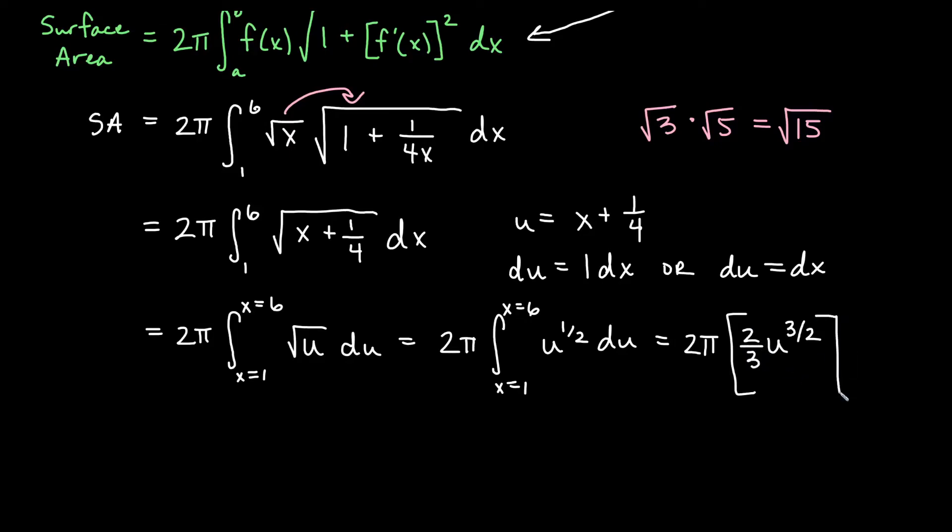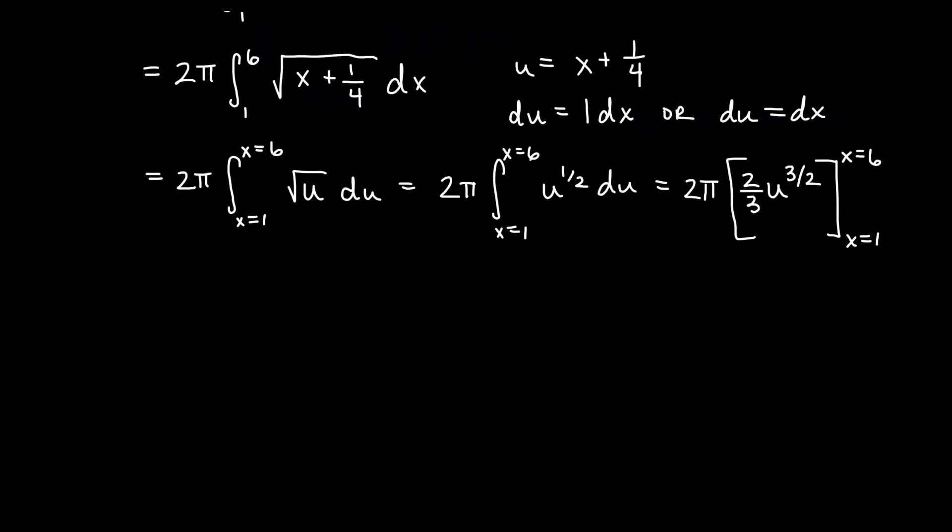Dividing by three halves is like multiplying by two thirds. And again our bounds are x bounds, from x equals 1 to x equals 6. Let's change back to x now. I'll replace my u and multiply my two thirds times my two π here. So two times two thirds would give me four thirds π.